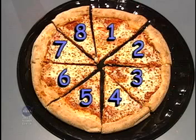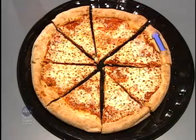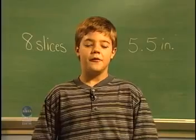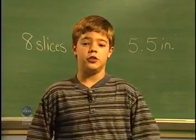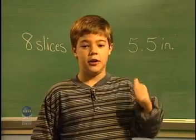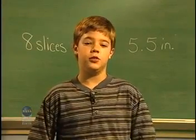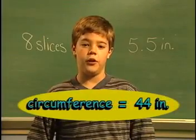Let's figure the circumference of this pizza. Most pizzas are measured in inches. So using the pizza with eight slices, if the length of the crust arc is five and a half inches, how round is your pizza? If there are eight slices and the crust arc measures 5.5 inches long, then eight times 5.5 inches equals 44 inches. The pizza has a circumference of 44 inches.